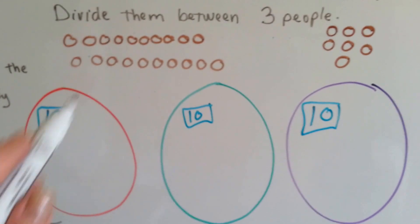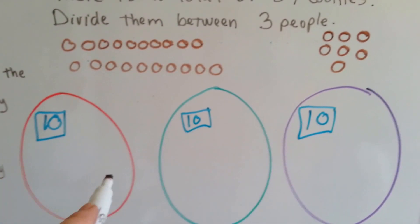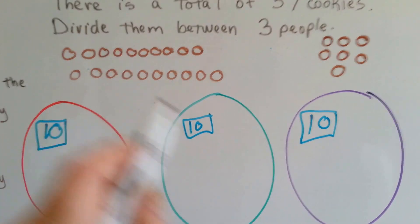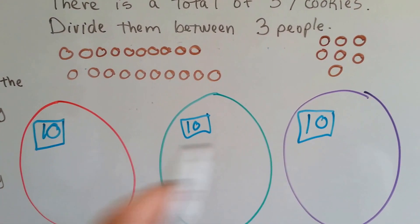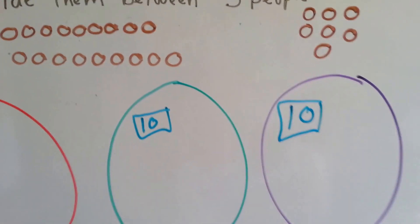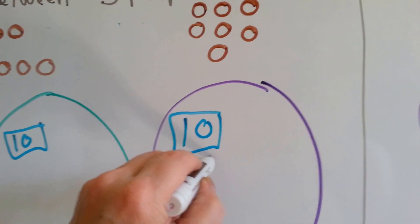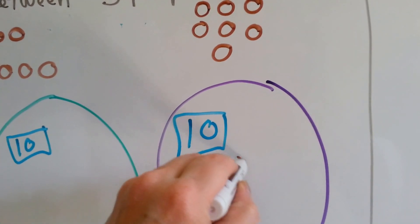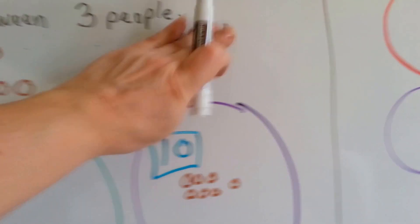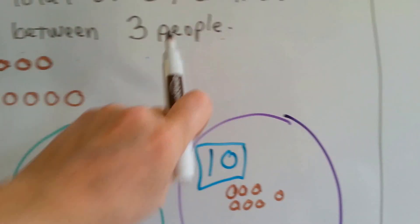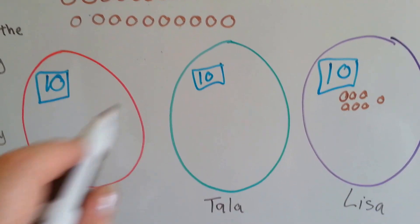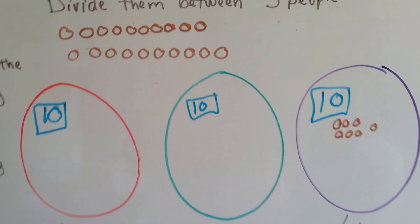Now we need to split these equally. There are seven loose cookies here, and ten and ten from the opened bags. Can they each get seven? Yes. We can put this group of seven into Lisa's pile — one through seven. So that group of seven is gone. Now we need to give Tala and Emma seven each, to be fair.